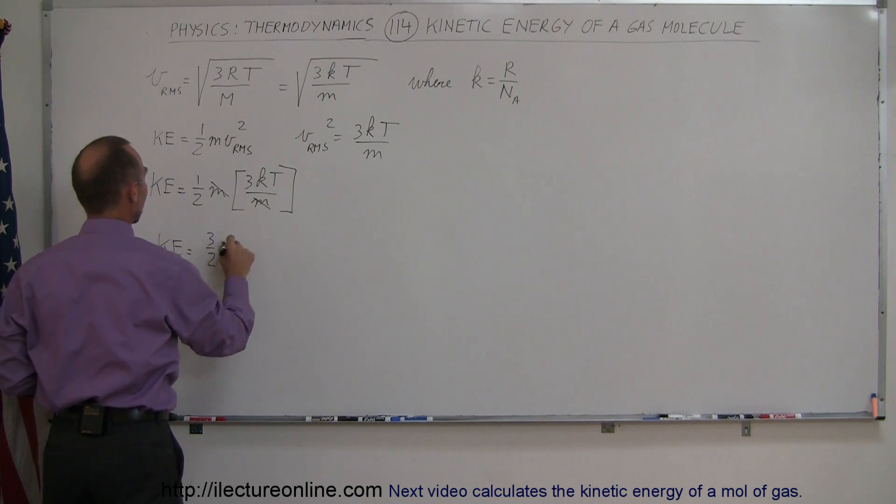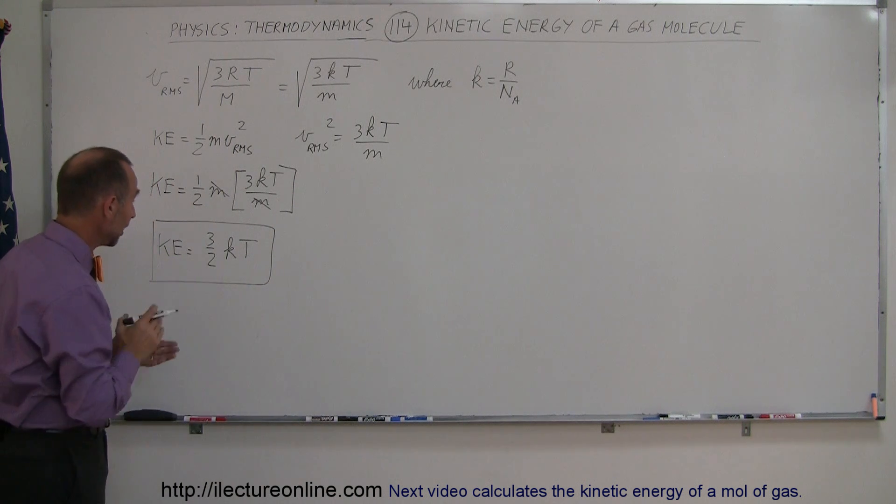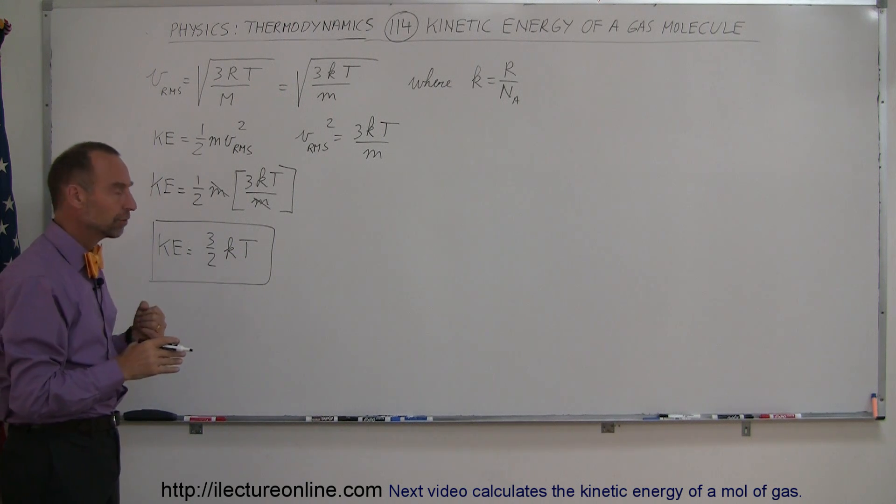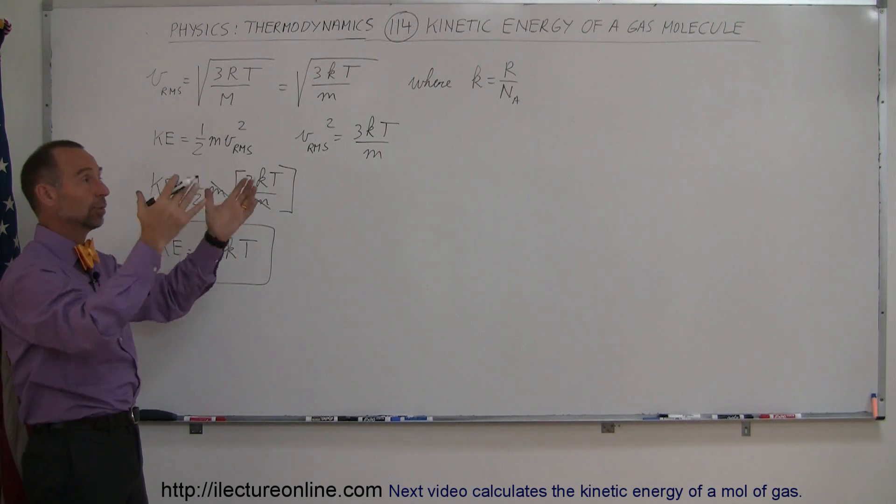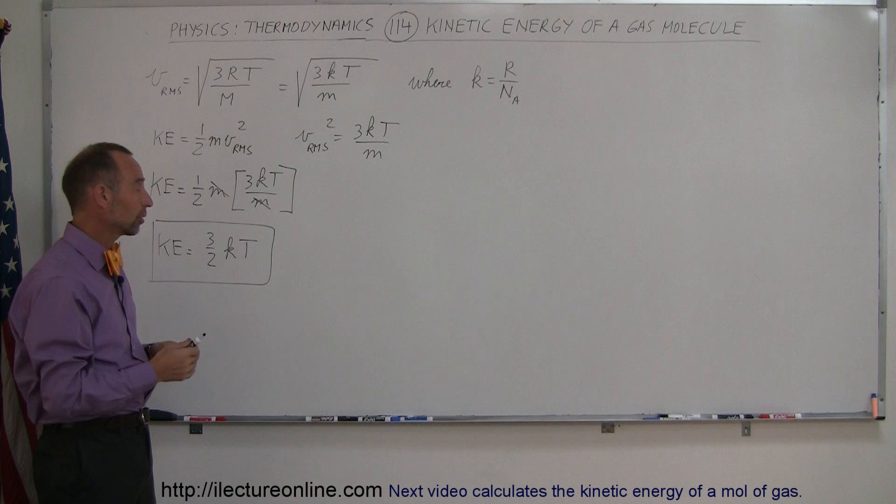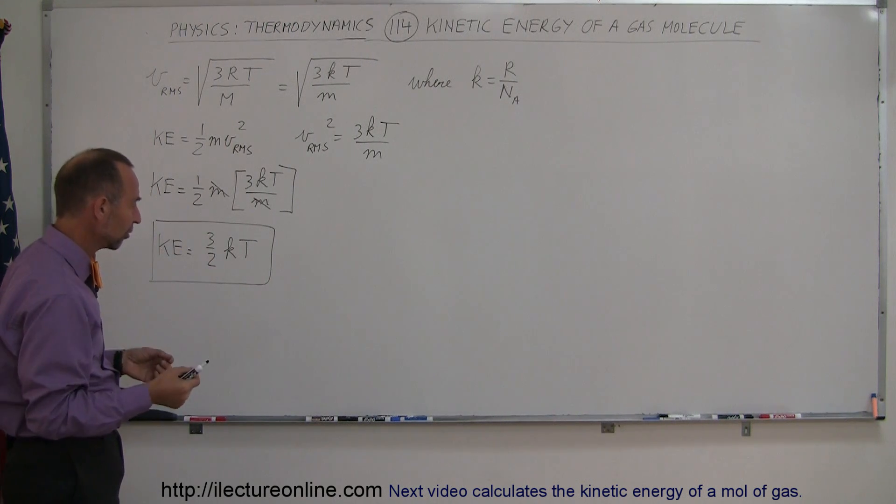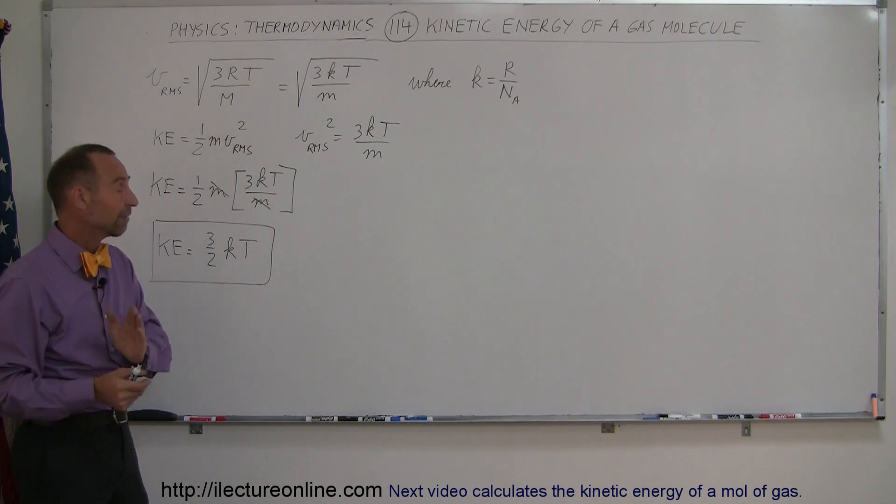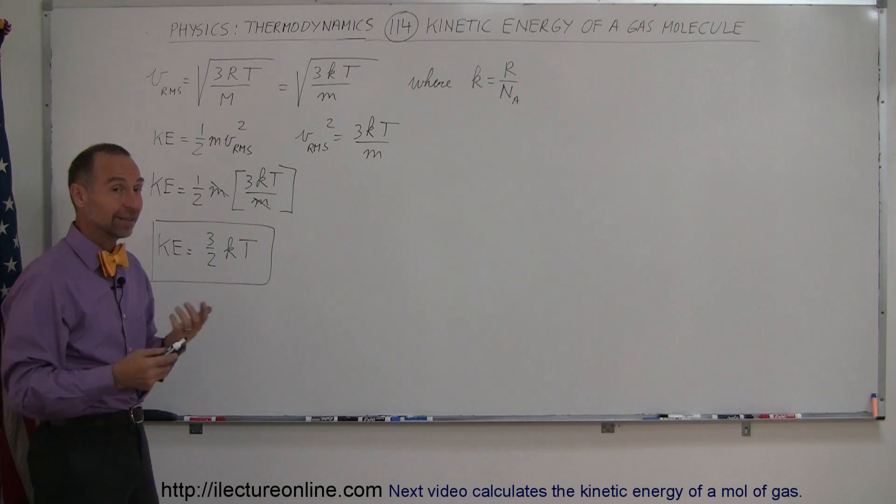And so simply said, kinetic energy of a molecule is equal to 3 over 2 times KT, and that's an interesting result because now what it's telling us is that it only depends on the temperature of the gas and not on the mass or anything else. So in any gas like let's say this room that's full of air and it has oxygen molecules and nitrogen molecules and argon and carbon dioxide flying around in all different directions, all of the molecules even though they have different speeds because they have different masses, all have the same kinetic energy each molecule and that's an amazing result.